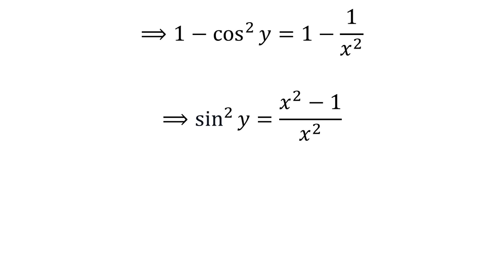By application of the famous identity square of sine of y plus square of cosine of y is equal to 1, we got 1 minus square of cosine of y is equal to square of sine of y. So square of sine of y is equal to square of x minus 1 divided by square of x.